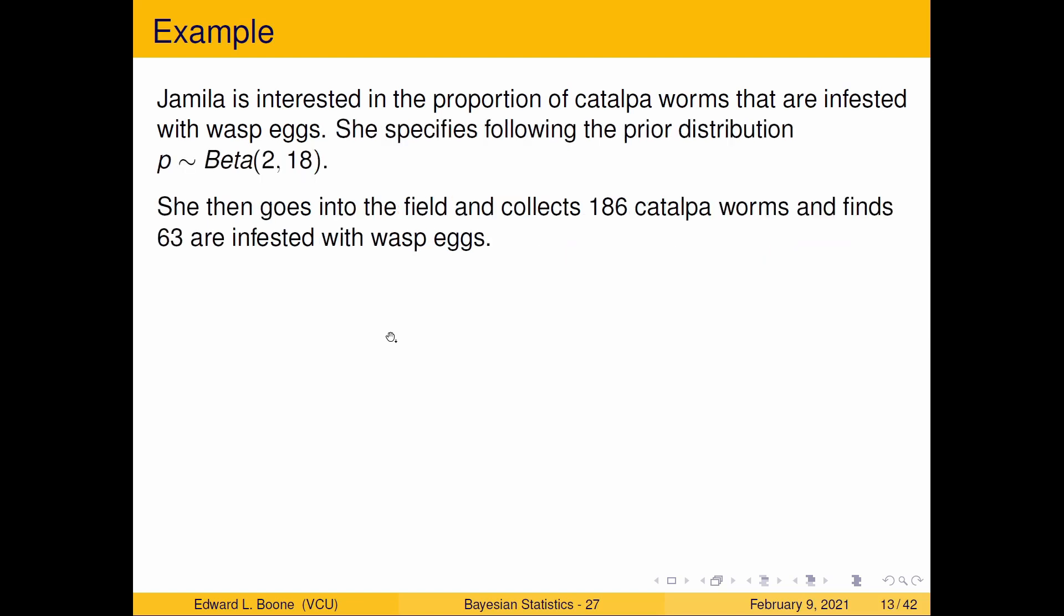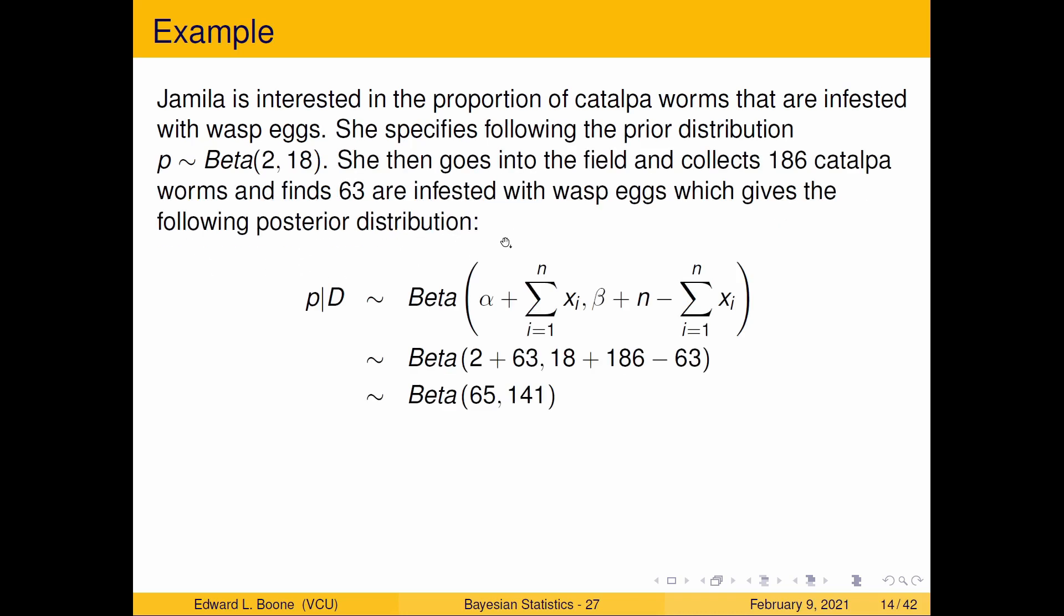And then she can go off and collect some data. So she goes to the field, collects 186 caterpillar worms, and finds that 63 are infested with wasp eggs. So put this information into our posterior distribution that we have our data. Alpha is 2. The sum of the xi is 63. 18 was our beta. N is 186. And 63, again, is the sum of the xi, which is the sum of the successes. So that leaves us with a beta 65, 141.